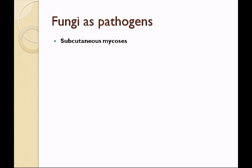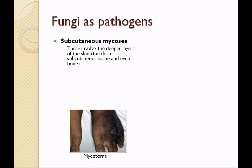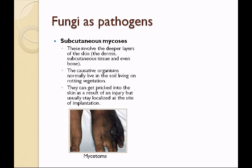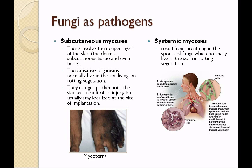Fungi can also cause mycoses below the surface of the skin — these are subcutaneous mycoses. This involves the dermis, subcutaneous tissue, and sometimes even bones. This image shows a fungal infection called a mycetoma. The causative organisms normally live in the soil or on rotting vegetation and get pricked into the skin as a result of an injury. Systemic mycoses typically result from breathing in spores of fungi. Examples include Histoplasma capsulatum and Coccidioides immitis, both of which can cause lung infections.